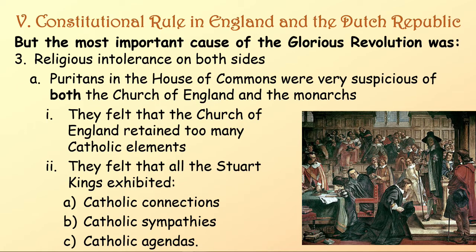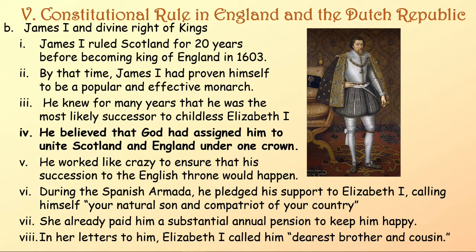The most important cause of the Glorious Revolution was cause number three: religious intolerance on both sides. Puritans in the House of Commons were very suspicious of both the Church of England and of the monarchs. They felt the Church of England retained too many Catholic elements, and that all the Stuart Kings exhibited Catholic connections, Catholic sympathies, and Catholic agendas. Let's go back to James I since we're exploring this third cause.